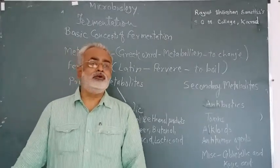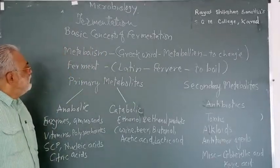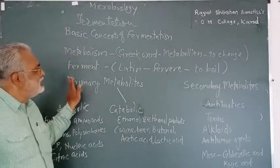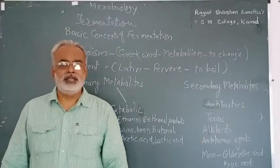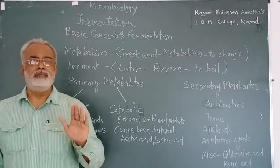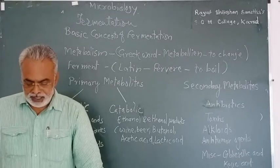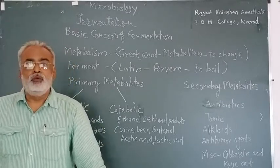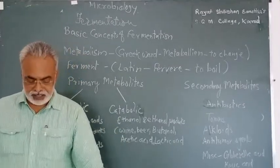The third group is microbial metabolites. In microbial metabolites there are two types: primary metabolites and secondary metabolites. A metabolite is a product of metabolism. Normally the metabolites are subgrouped under primary metabolites and secondary metabolites.